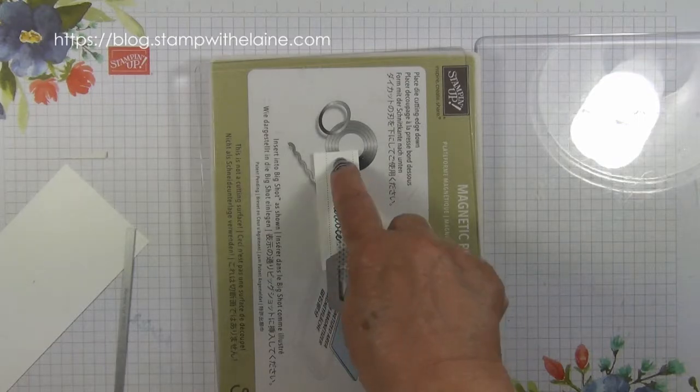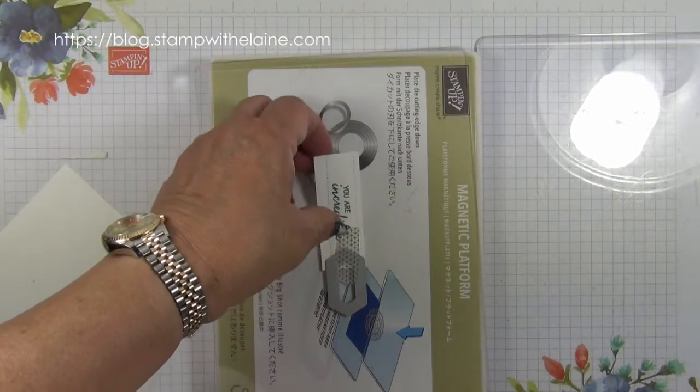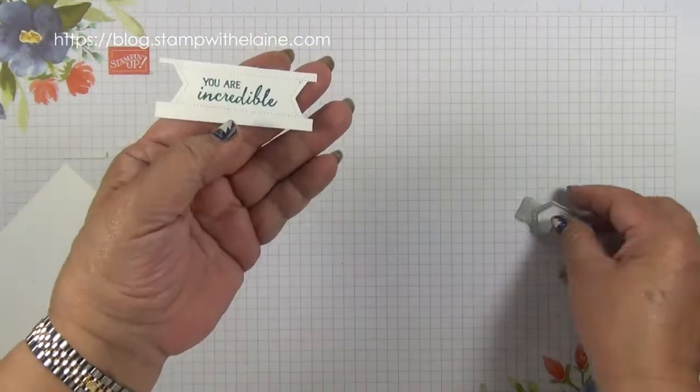Run it through the big shot and repeat for the other side. So I'll go and do that off camera and I'll be back. You have your stitched tag.